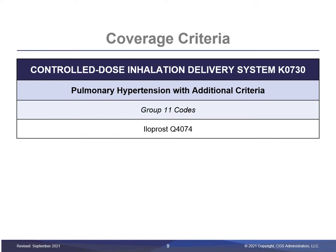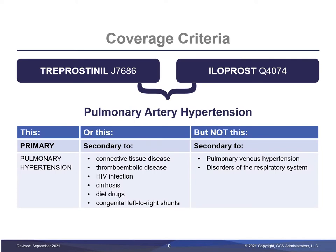Iloprost requires the same additional criteria for coverage of the controlled dose delivery system for beneficiaries diagnosed with pulmonary hypertension. As noted on the previous slides, if the beneficiary has a diagnosis of pulmonary artery hypertension, it can be primary or secondary to connective tissue disease, thromboembolic disease, HIV infection, cirrhosis, diet drugs, or congenital left-to-right shunts. A qualifying pulmonary hypertension diagnosis cannot be secondary to pulmonary venous hypertension or disorders of the respiratory system, per the coverage criteria.